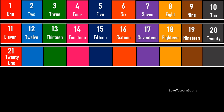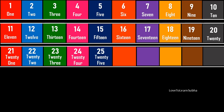21 - TWENTY (20) - O, N, E (1) - 21. 22 - TWENTY (20) - T, W, O (2) - 22. 23 - TWENTY (20) - T, H, R, E, E (3) - 23. 24 - TWENTY (20) - F, O, U, R (4) - 24. 25 - TWENTY (20) - F, I, V, E (5) - 25.